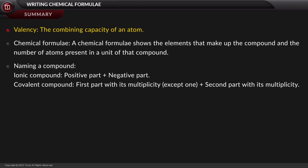This is followed by the method of writing a chemical formula. A chemical formula shows the elements that make up the compound and the number of atoms present in a unit of that compound.